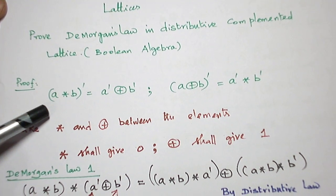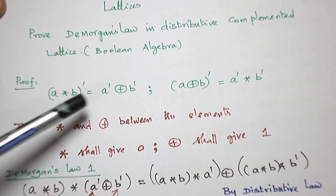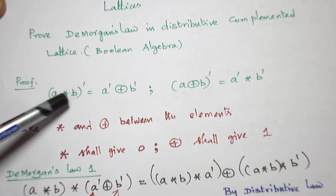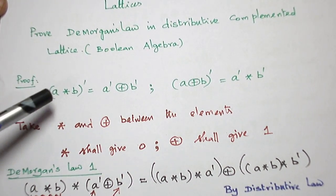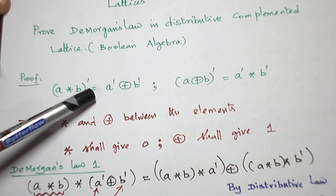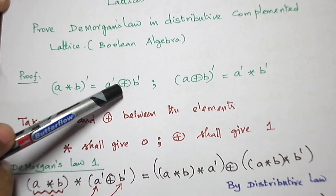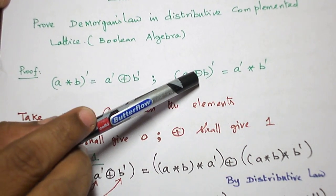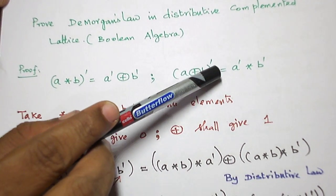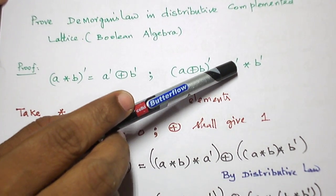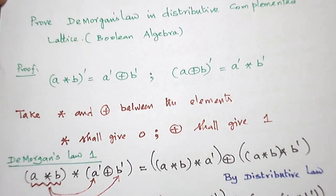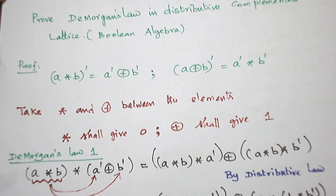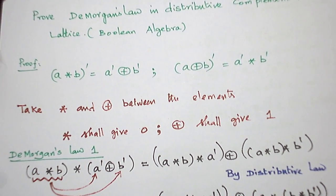These are the two De Morgan's laws. The first: A star B whole dash equals A dash plus B dash. The second: A plus B whole dash equals A dash star B dash. This is what we have to prove.